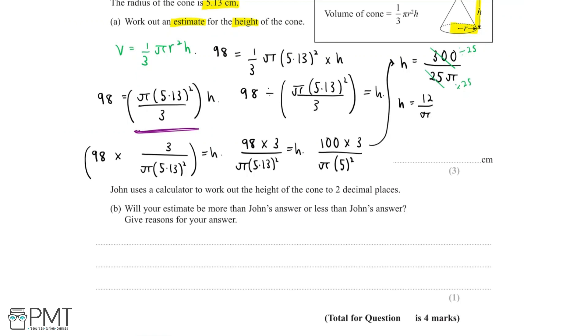Now we need to estimate just a little bit further. Well, π we know is roughly 3.14. So we can say that 12 divided by 3.14. Now when we round 3.14 to one significant figure, we're left with 3. So we can say that's similar to 12 divided by 3. And so based on our rounding and our estimation, we can now say that the estimation for the height of the cone is equal to 12 divided by 3, which is 4 centimeters.